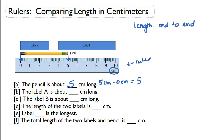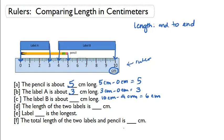Let's look at label A. The end of label A is at 0 and the other end is at 3. So 3 centimeters minus 0 centimeters gives us 3 — label A is about 3 centimeters long. Label B starts at 4 centimeters and goes to 10 centimeters. We find the difference: 10 minus 4 gives us 6 centimeters. Label B is 6 centimeters long.